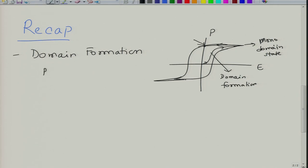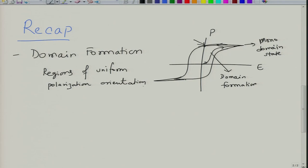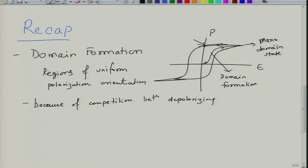Domains are nothing but regions of uniform polarization orientation. They form because of competition between depolarizing energy - which wants to depolarize the material to reduce the surface charge density - and interfacial energy, which is nothing but domain wall energy.